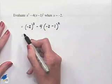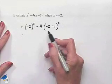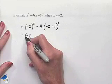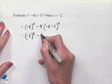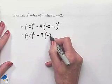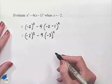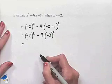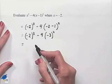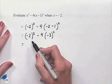Now we'll work by order of operations. Within the parentheses first, that will give us (-2)³ - 4(-3)². Next we can evaluate our exponential expressions. We have (-2)³, that's -2 times -2 times -2, to give us a product of -8.